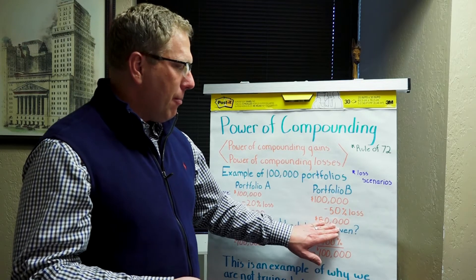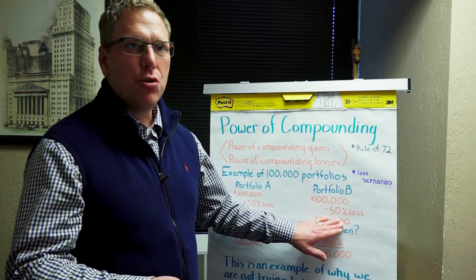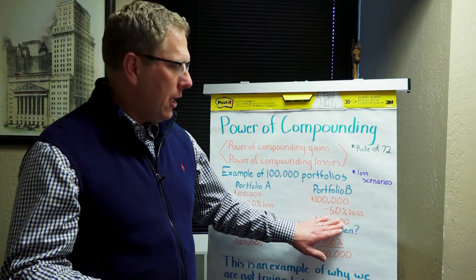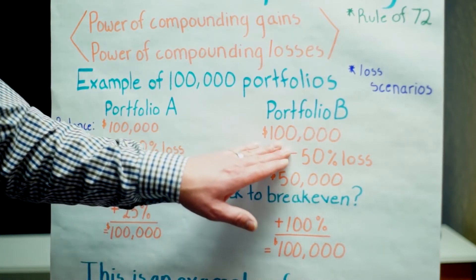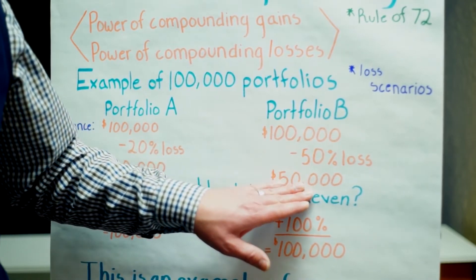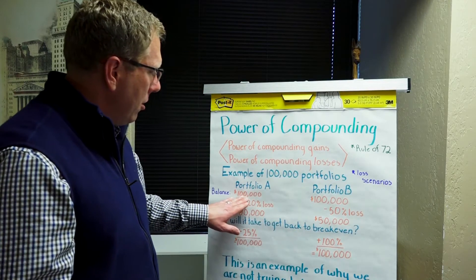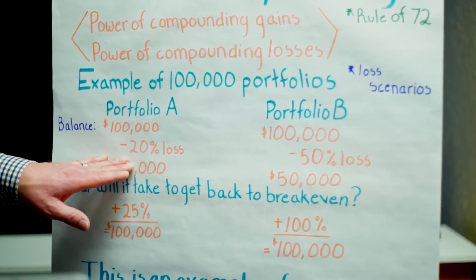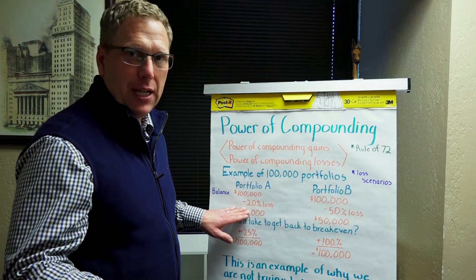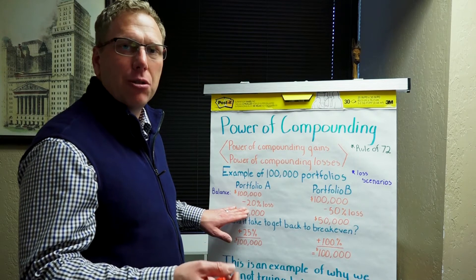Let's say the market corrects 50 percent — we've had at least two of those in the last 20 years. It corrects 50 percent to the bottom: your hundred thousand, if you lose 50 percent, is worth fifty thousand dollars. Over in Portfolio A, when the market was going up it wasn't making 23 or 24 percent — it might have only been making 10, 12, or 14 percent, because of the conservative nature of how the money was invested.